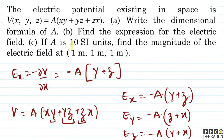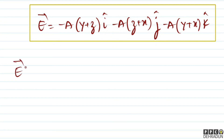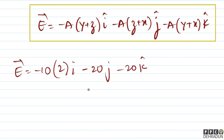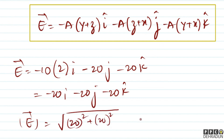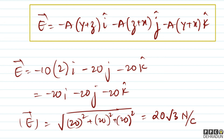Part 3: A = 10 SI units, find |E| at (1,1,1). E⃗ = −10(1+1)î − 10(1+1)ĵ − 10(1+1)k̂ = −20î − 20ĵ − 20k̂. |E| = √(20² + 20² + 20²) = 20√3 N/C.